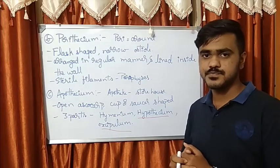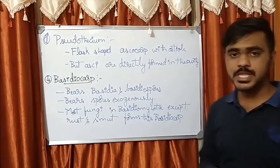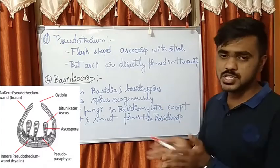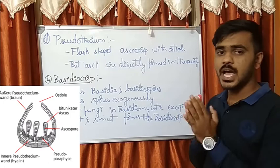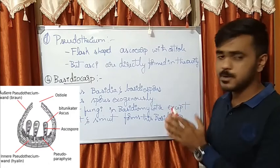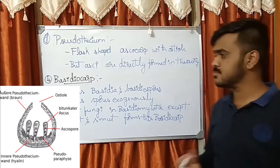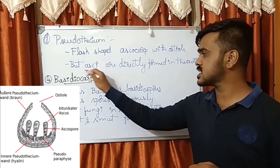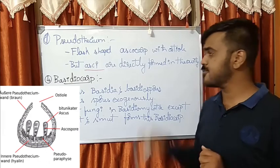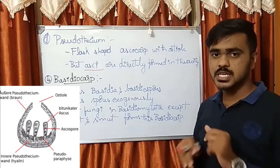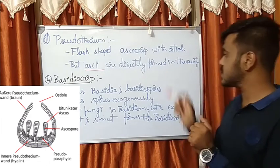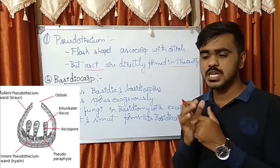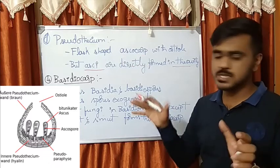The last among the ascocarps is the pseudothecium. The pseudothecium also has a flask-shaped ascocarp with an ostiole, but the key difference is that the asci are directly formed in the cavity — there are no specialized fruiting structures — and this condition is called the pseudothecium structure.